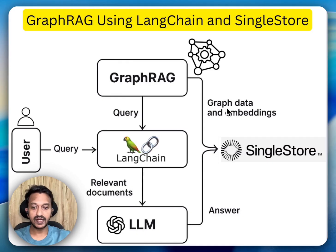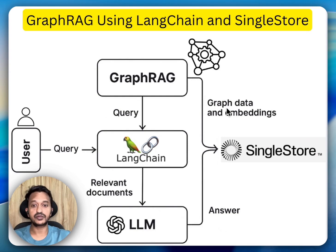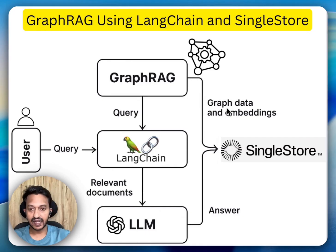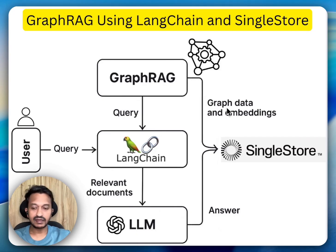The fourth step is to define graph logic — we expand queries using the graph and combine that with vector search from SingleStore. Finally, we use LangChain's retrieval QA with OpenAI to generate natural language, contextually relevant answers. Why is GraphRAG better? Compared to traditional RAG, GraphRAG brings structure, multi-hop reasoning, and better control over context. It's perfect for use cases in healthcare, legal, finance, or anytime you need smarter and contextually relevant responses.